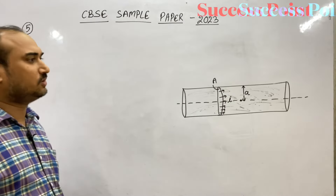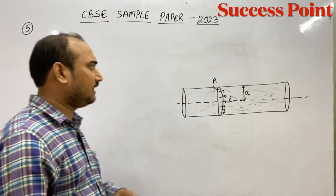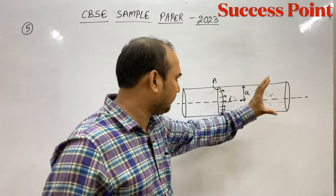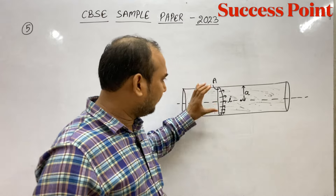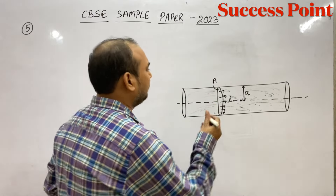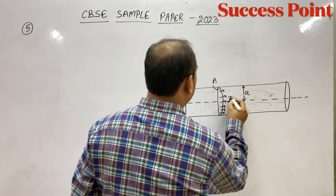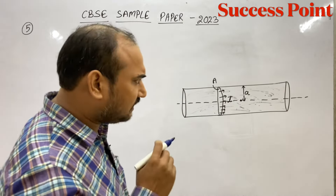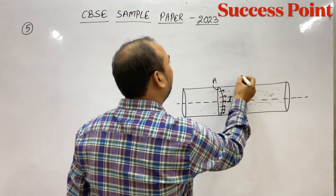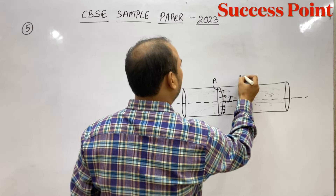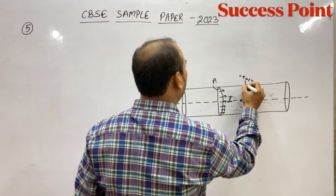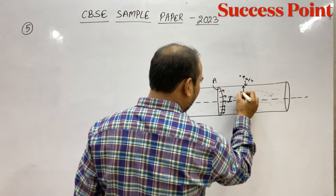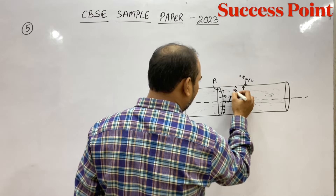तो देखिए बच्चों, इस question में हमसे क्या कह रहे हैं — एक wire है जिसमें current uniformly उसके पूरे area में distribute होके flow हो रही है, current I flow हो रही है। इस wire की जो radius है वो A है। इसके surface के ऊपर A/2 distance पर और इसके surface से नीचे A/2 distance पर — इन दोनों points की magnetic field का ratio निकालना है।